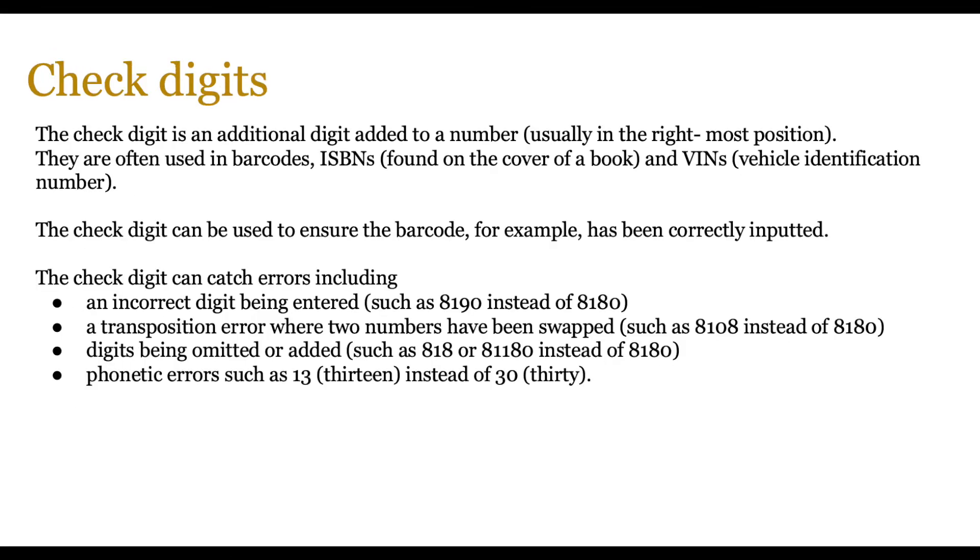Now, there are other mechanisms to check data, and check digits is quite common. The check digit is an additional digit added to a number, usually in the rightmost position. They are often used in barcodes, ISBN numbers, and vehicle identification numbers. The check digit can be used to ensure that the barcode, for example, has been correctly inputted.